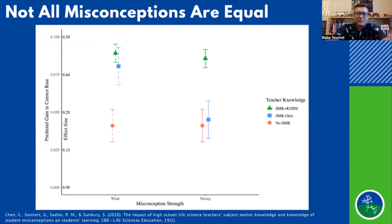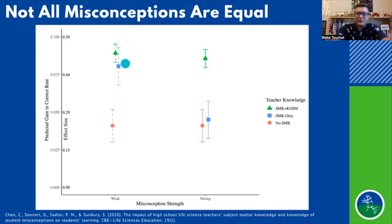Another finding from a similar study is that not all misconceptions are equal. As we talked about, there are three components: strength, coherence, and commitment. In misconceptions that are weak — meaning there's not a very high strength, coherence, or commitment — just having content knowledge will be enough to help teachers resolve those misconceptions with their students. Teachers who only have a high subject matter knowledge will significantly resolve weak misconceptions with their students compared to a teacher who doesn't have high subject matter knowledge.